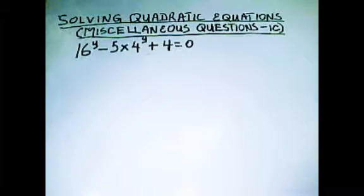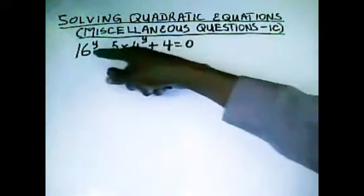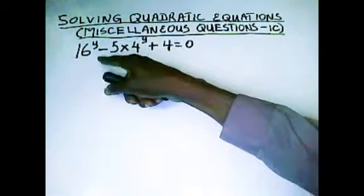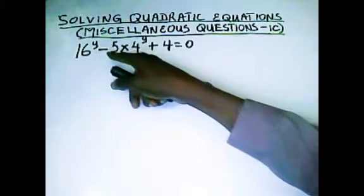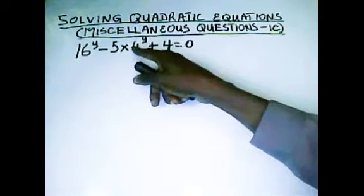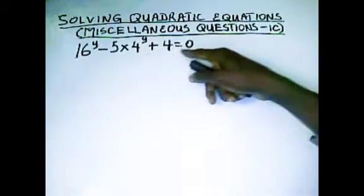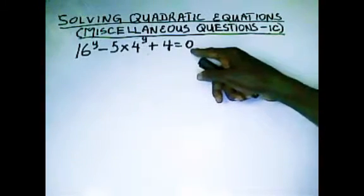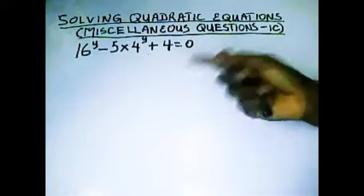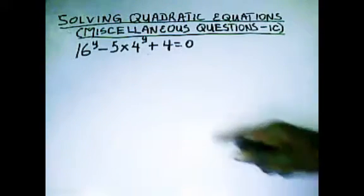Let us take the third miscellaneous question under our Solving Quadratic Equations series. On the board, we have 16^y - 5×4^y + 4 = 0. Now, how do we approach this question on the board?